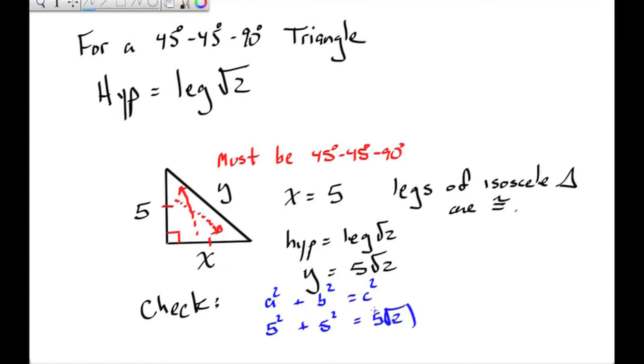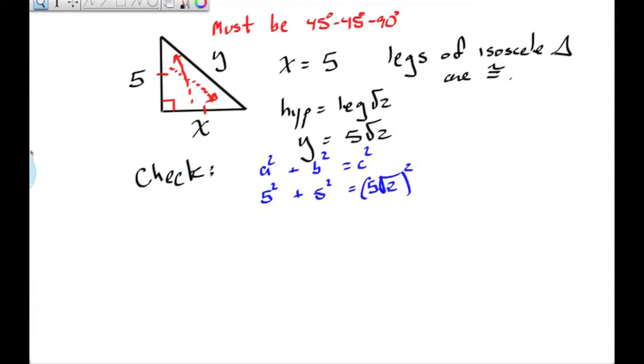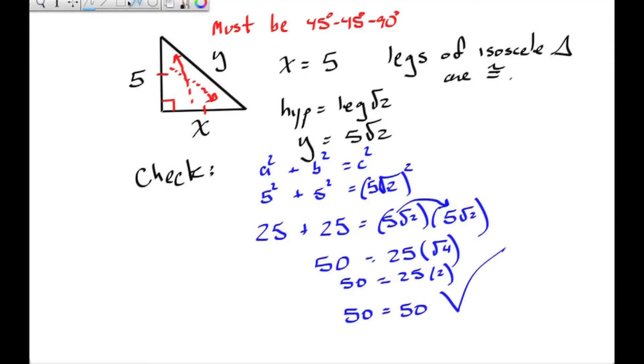In the check, we can substitute the legs, 5 and 5, and the hypotenuse, 5 root 2. So we end up getting 50 on the left side, and on the right, 5 times 5, which gives us 25, and then root 2 times root 2, which gives us 4. The square root of 4 is 2. 25 times 2 is 50. 50 equals 50. Check.